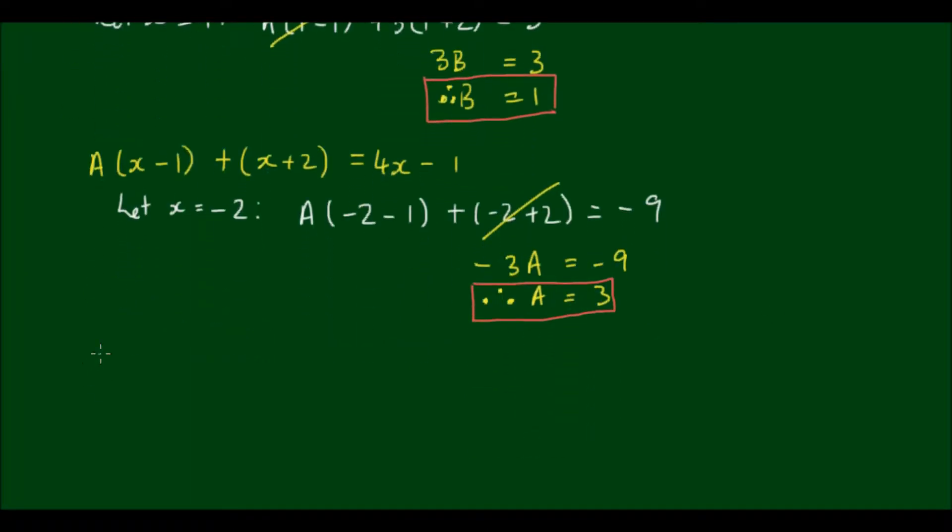So my original fraction, 4x minus 1 divided by x squared plus x minus 2, becomes 3 divided by (x+2) plus 1 divided by (x-1).